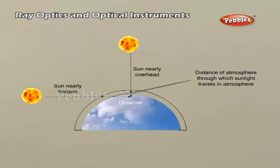Scattering of light. As sunlight travels through the Earth's atmosphere, it gets scattered by the atmospheric particles. Light of shorter wavelengths is scattered much more than light of longer wavelengths. The amount of scattering is inversely proportional to the fourth power of the wavelength. This is known as Rayleigh's scattering law. At sunset or sunrise, the sun's rays have to pass through a larger distance in the atmosphere, so most of the blue and other shorter wavelengths are removed by scattering. The least scattered light reaches our eyes; therefore, the sun looks reddish. This explains the reddish appearance of the sun and full moon near the horizon.